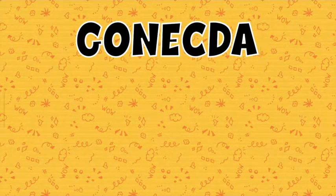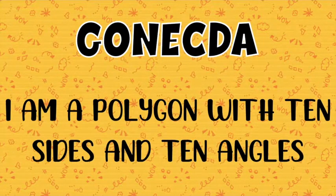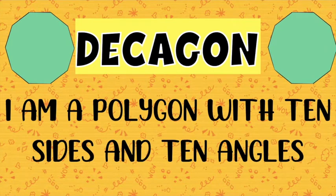How about this? I am a polygon with ten sides and ten angles. What shape am I? Good job! I am a decagon. Always remember that decagon has ten sides and ten angles.